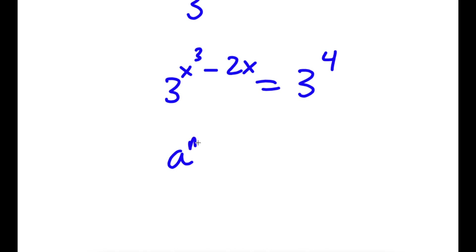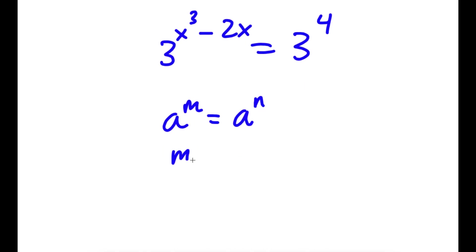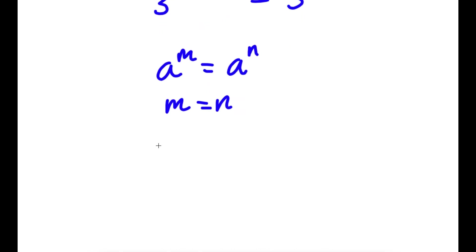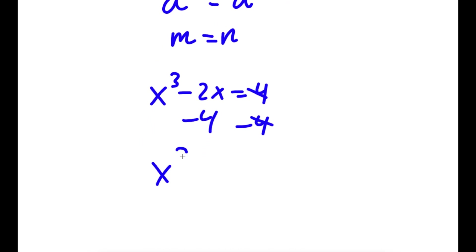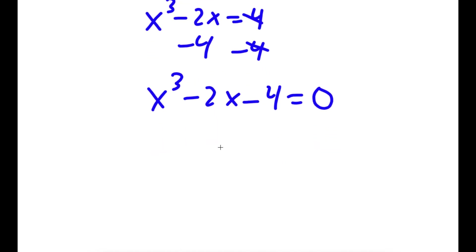Now if a to the power of m equals a to the power of n, this means m equals n. So x to the power of 3 minus 2x is equal to 4. I'm going to subtract 4 on both sides and get x to the power of 3 minus 2x minus 4 is equal to 0.